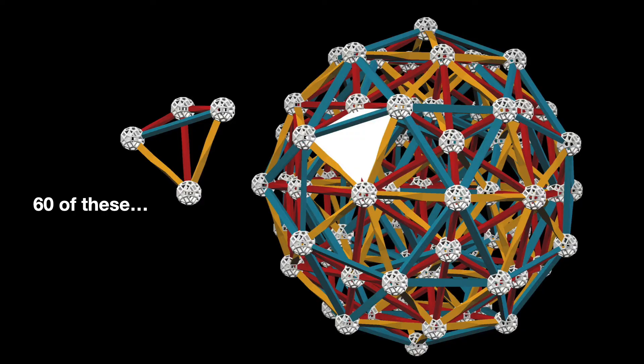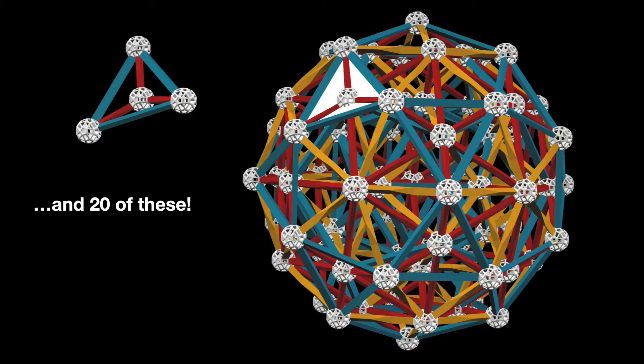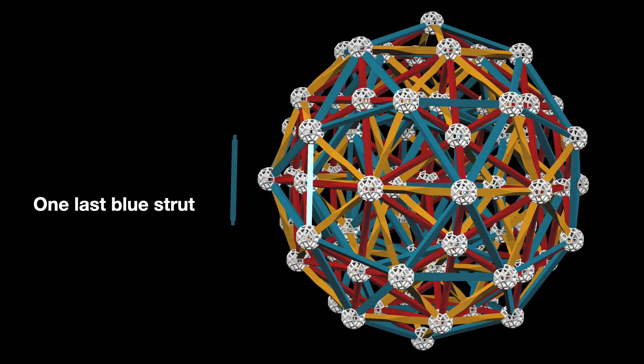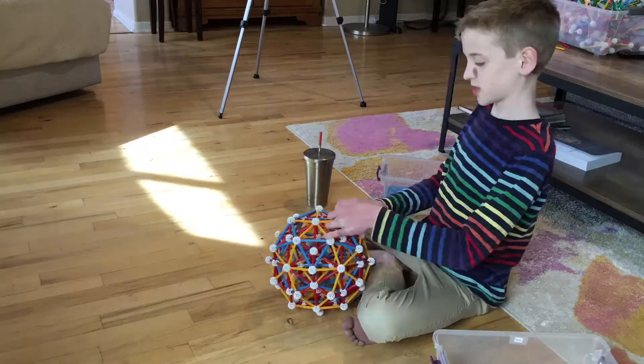Then there are finally 80 more tetrahedra of two types going in between all these. They only require single struts. And then after this, it is done.